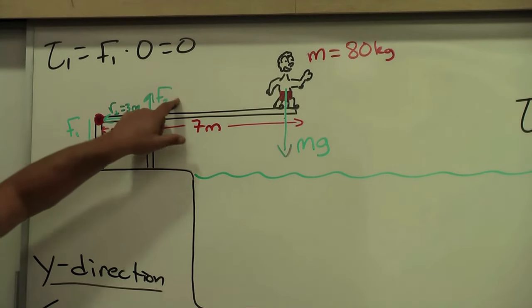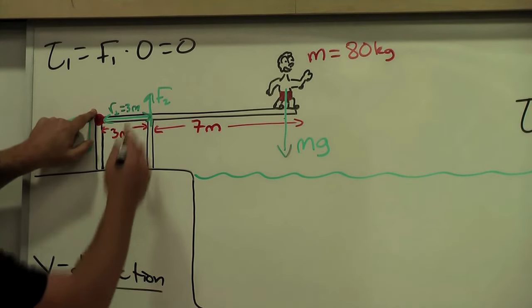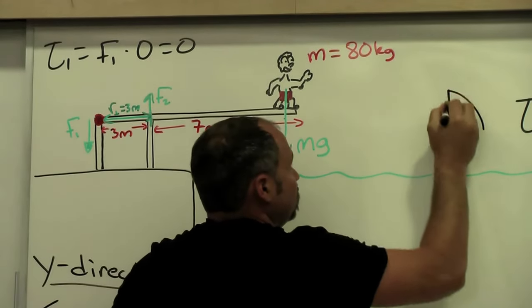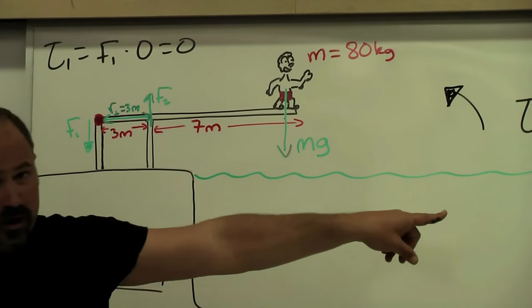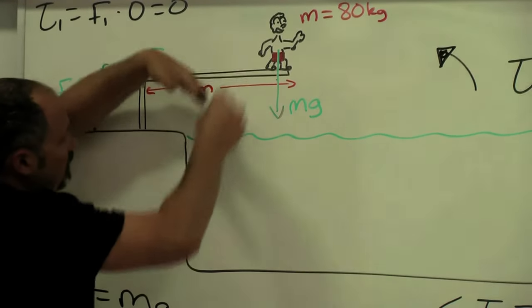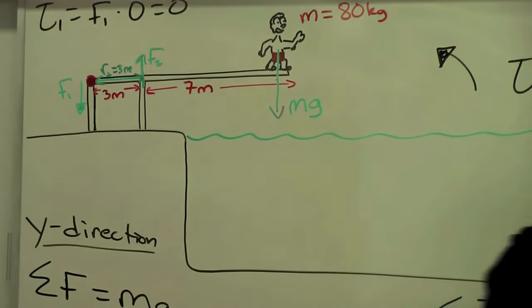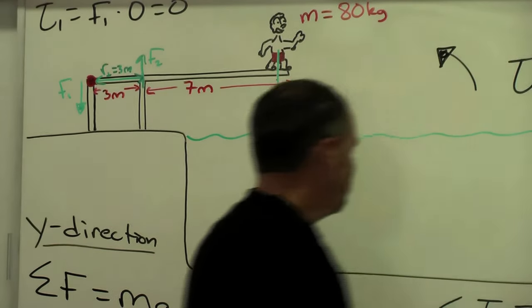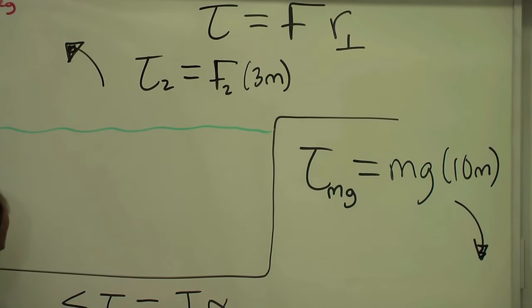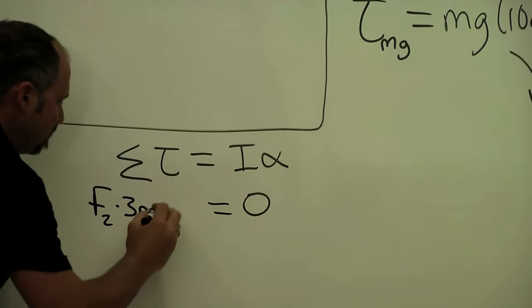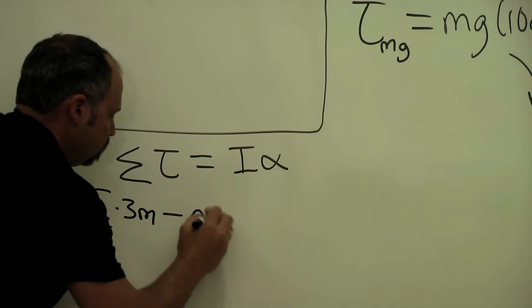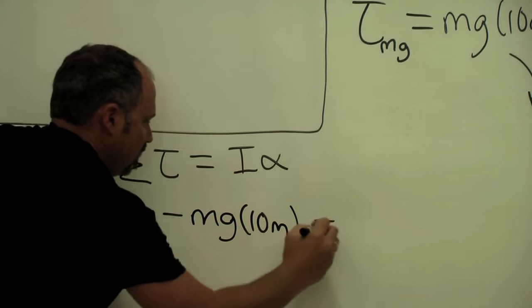So the torque provided by F2 for this pivot point, well the force is up, here's the pivot, it's going to cause it to rotate like this. Rotational direction like this. Now for the torque of the force of gravity, force is downward, here's the pivot point, so you can see it's going to cause it to rotate like this. So they're in opposite directions. Doesn't matter but let's choose this one to be positive and this one to be negative. So then we have F2 times three meters minus mg times 10 meters all equal to zero.